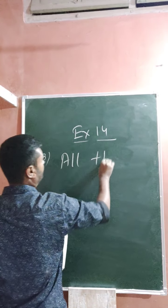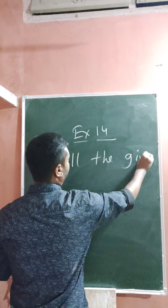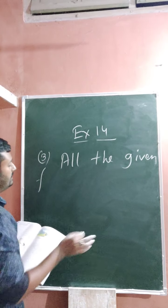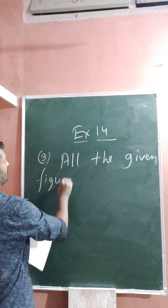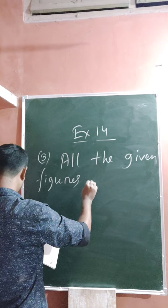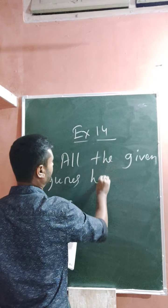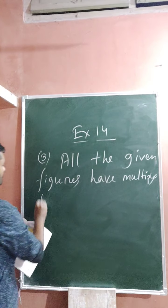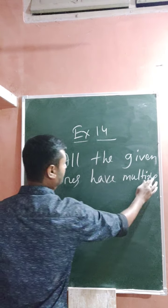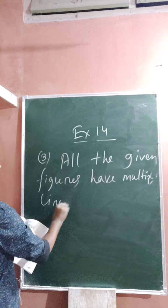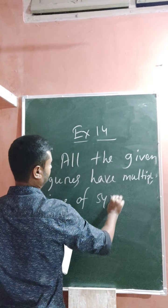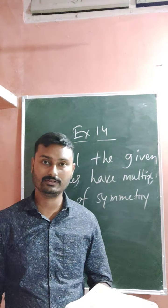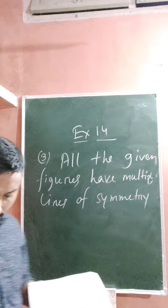All the given figures have multiple lines of symmetry. Draw the figures in your copies, draw the lines of symmetry, and then write: all the given figures have multiple lines of symmetry. Draw the lines of symmetry in your copies.